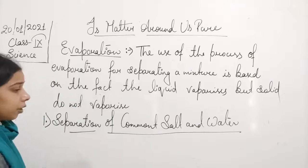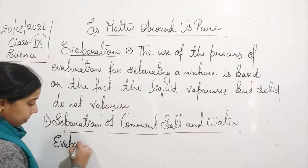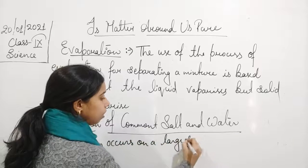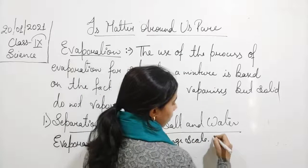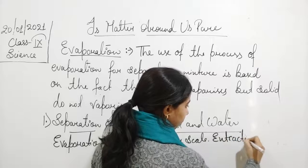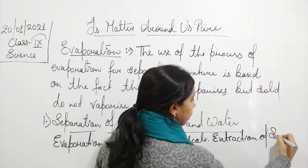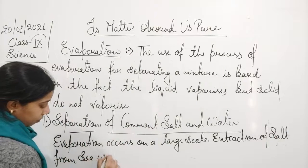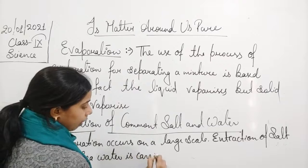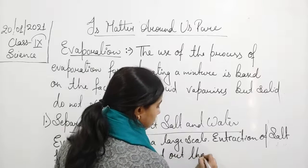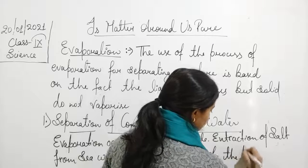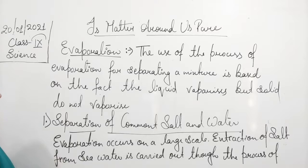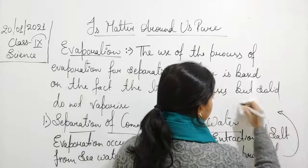So the extraction of salt from seawater is carried out through the process of evaporation, which occurs on a large scale. We can say that with the help of evaporation, we are able to separate common salt from water.